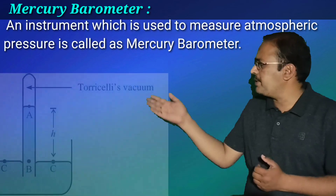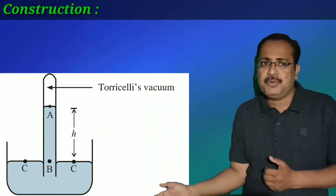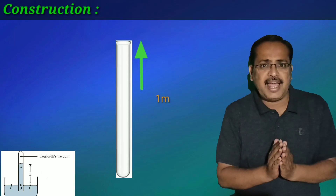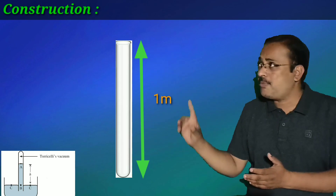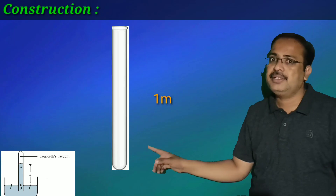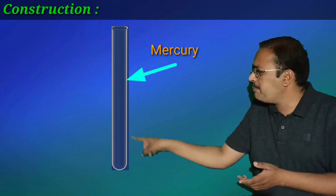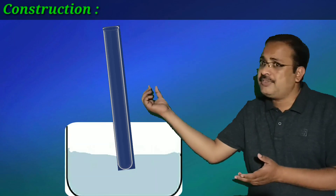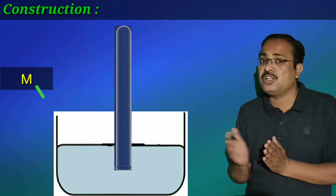The construction of this barometer is as shown in the figure. It consists of a glass tube of 1 meter length and 1 centimeter diameter. This tube is filled with mercury up to its brim, then quickly inverted into a small dish which also contains mercury.